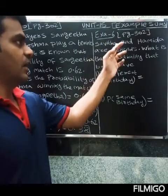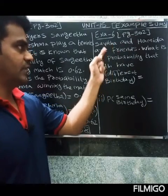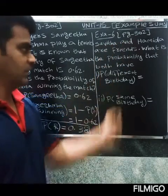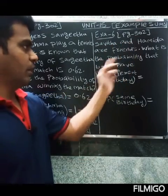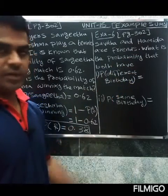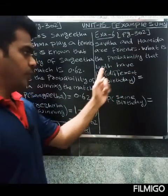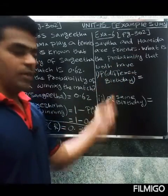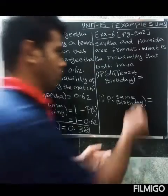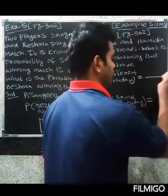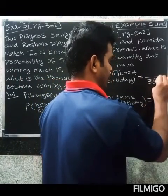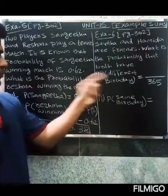Savitha and Hamitha are friends. What is the probability that both have different birthdays? Total possibilities: one year has 365 days.